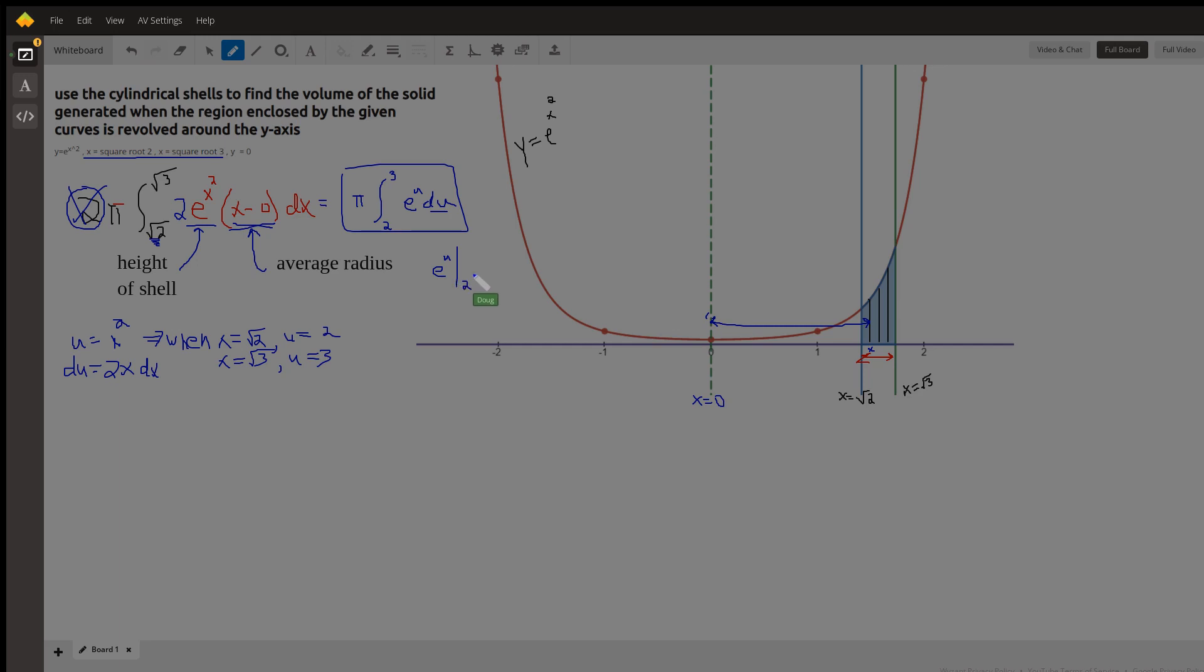We want to evaluate that from 2 to 3 and multiply the result by pi. So it's pi times e cubed minus e squared.